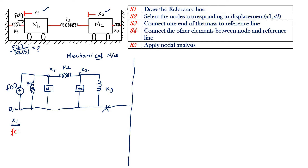How to write the equation? F of T is equal to M1 into d²X1/dT² plus K1 into X1, plus with respect to X1, K2 into X1 minus X2. This is equation number 1.